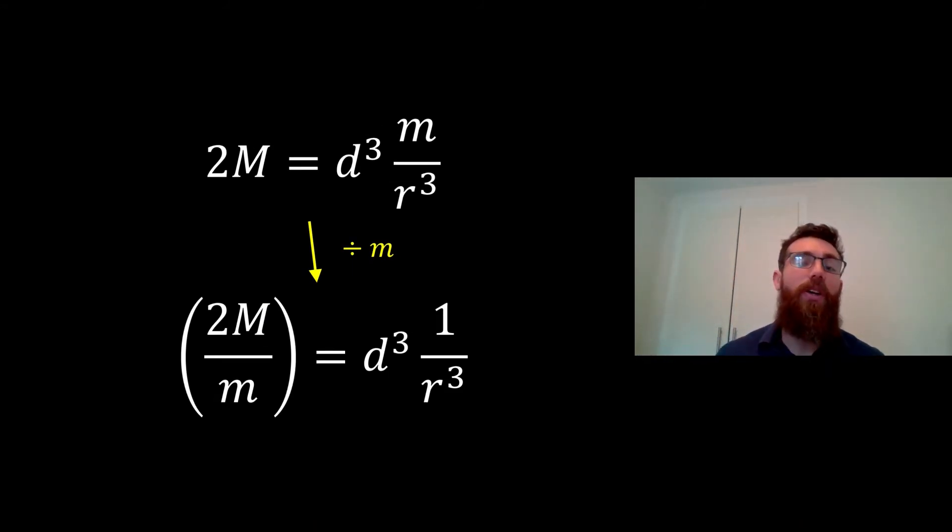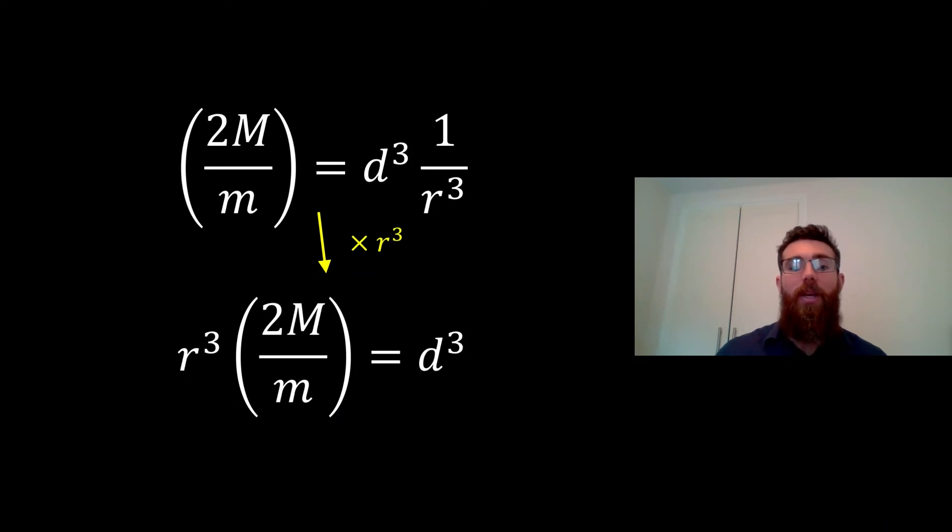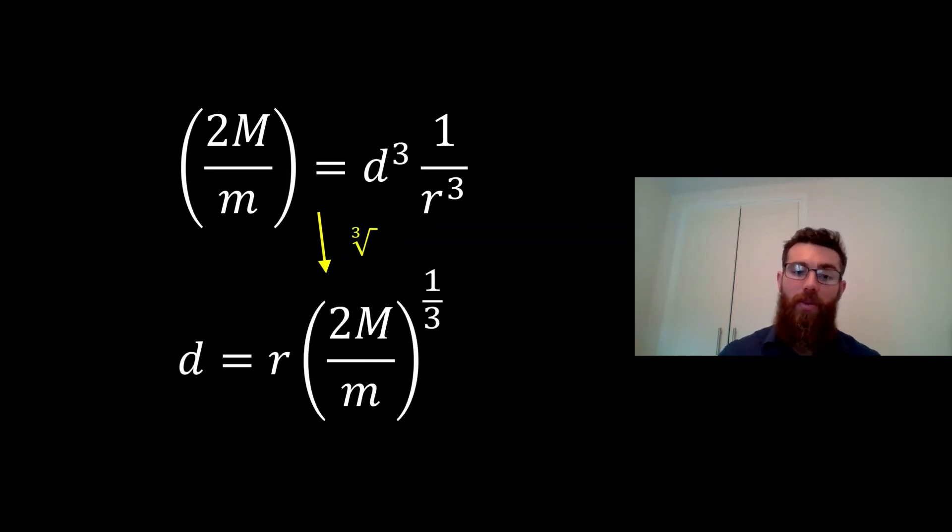Now if we then divide through by the mass of the satellite, we can remove it from the right hand side and then we end up with it dividing the 2M on the other side. Now we will multiply through by the radius of the satellite cubed. That removes our r cubed from the right hand side and leaves us just with the Roche limit cubed. So we can flip it around actually and take the cube root to both sides and then we have an expression for the Roche limit.